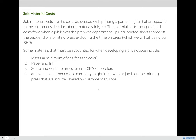Some materials that must be accounted for in addition to time on press are the plates that will be used. We charge for each plate and need at least one plate per ink. So if a client produces a job with eight colors, they get charged more than a client with only four colors, because we charge one plate per color.